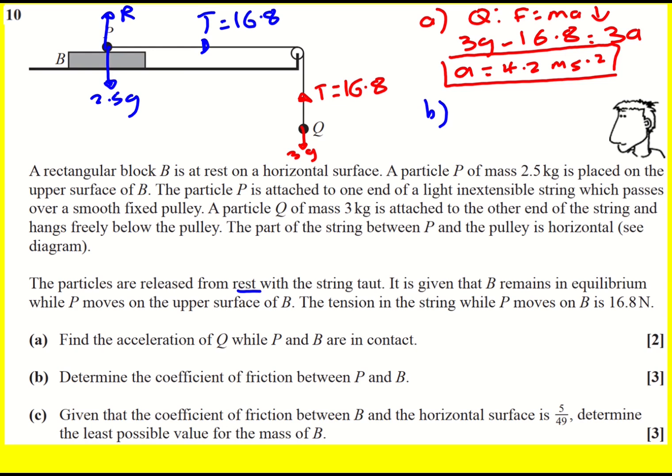Onto part B, we're asked to determine the coefficient of friction between P and B. So there is going to be friction which is going to be opposing the motion to the left but I didn't know that up until this point. The question didn't specify it. I'm going to call that FR. Now here's the thing, we've got an acceleration down of 4.2 for Q but it's going to be exactly the same as acceleration to the right on P because the string is taut.